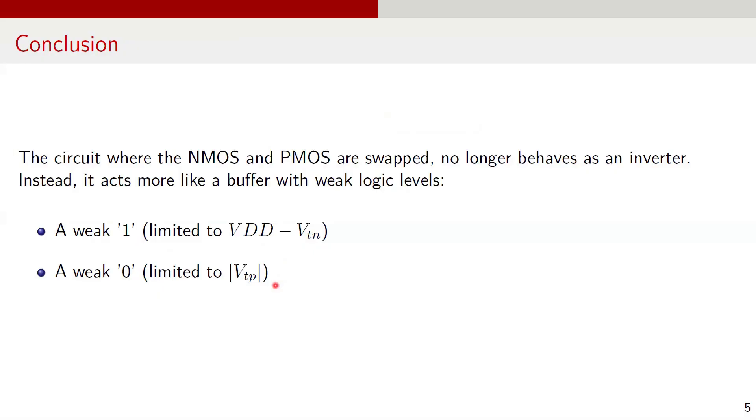This behavior illustrates why CMOS logic design places the PMOS in the pull-up network connected to VDD and the NMOS in the pull-down network connected to ground. Since PMOS transistors are better at pulling the output up to VDD and the NMOS transistors are better at pulling the output down to 0, this ensures full logic level swings.